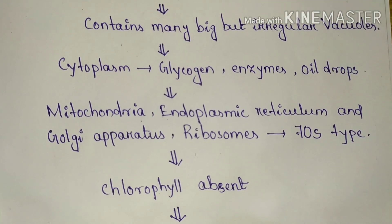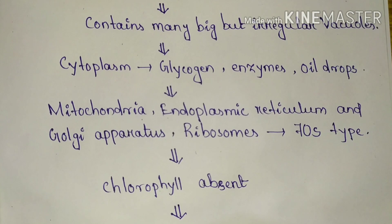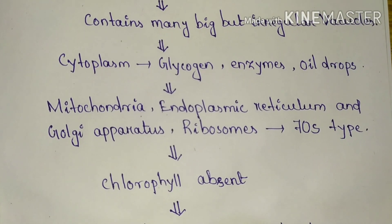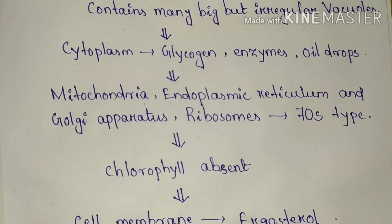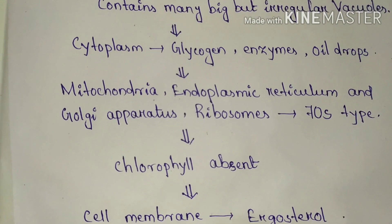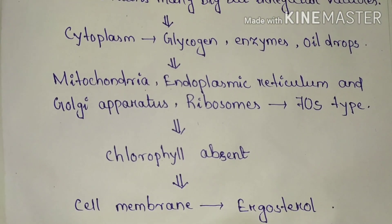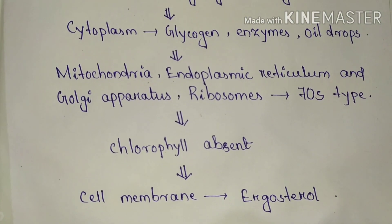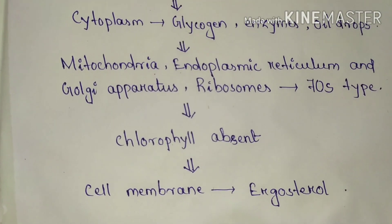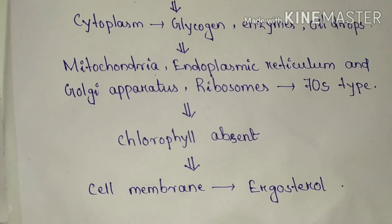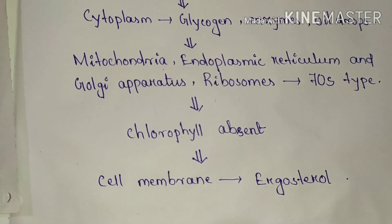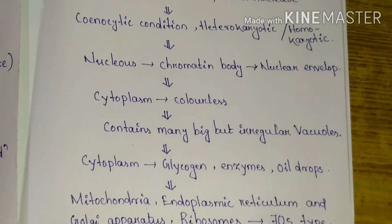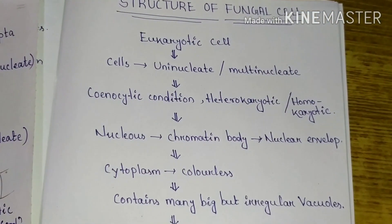Membrane-bound organelles include mitochondria, endoplasmic reticulum, Golgi apparatus, and ribosomes. The ribosomes are of the 70S type. Since fungi are heterotrophic organisms, chlorophyll is absent, meaning they cannot perform photosynthesis. The cell membrane of fungi contains ergosterol, which replaces the cholesterol found in animal cells.